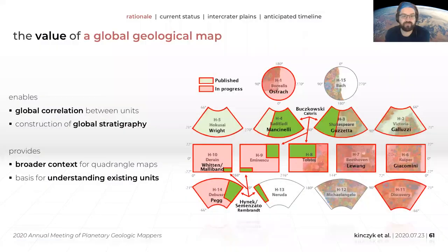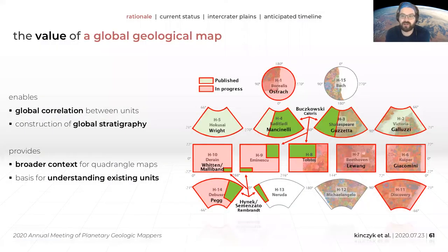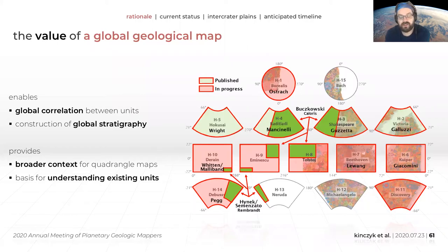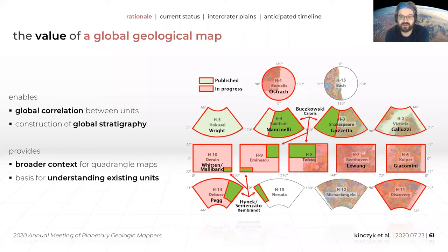I don't think I need to convince anybody at this workshop of the value of a geological map, but I want to explain why we're doing a global one for Mercury. Mercury was visited by NASA's MESSENGER spacecraft from 2011 through 2015, with three flybys before that, which returned images of essentially the entire surface. In the 70s, the Mariner 10 spacecraft imaged about 45% of the surface, and those 45% — the quads corresponding to that part of the planet — were drawn up as geological maps. There was a long-standing issue in generating these quads because people making them often didn't communicate with each other, which is a big problem when you try to stitch everything together.